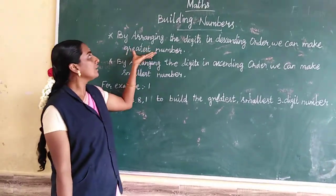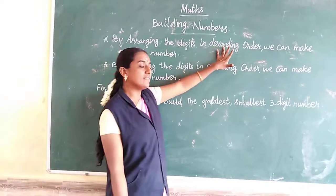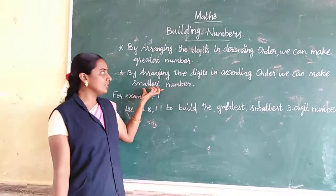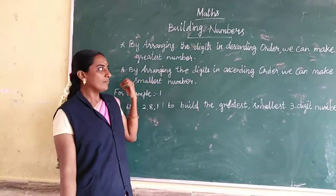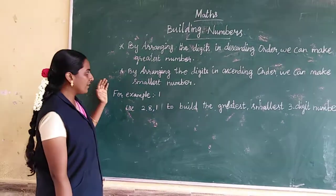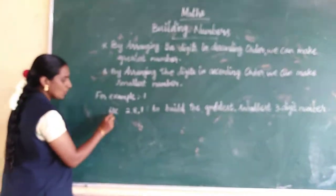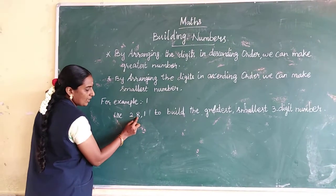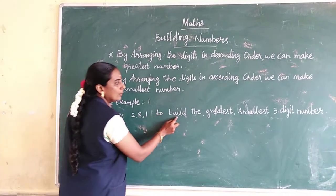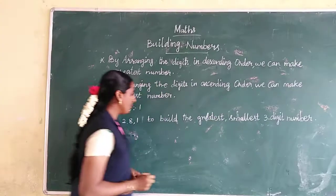When we build the greatest number, we use descending order. When we build the smallest number, we use ascending order. For example, first example: use 2, 8, 1 to build the greatest and smallest 3-digit number.